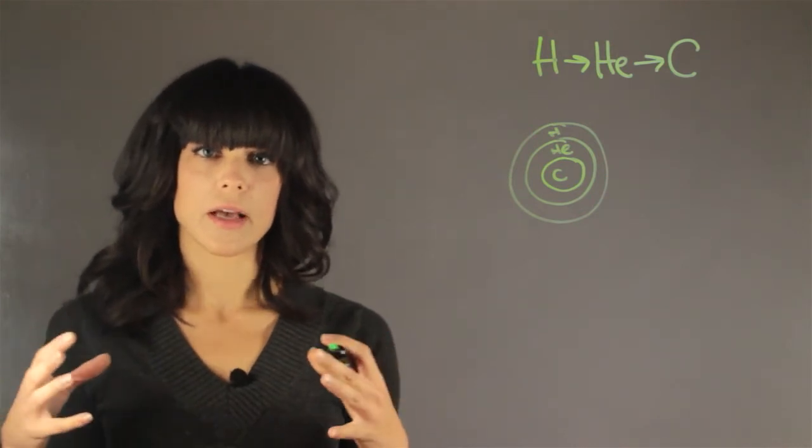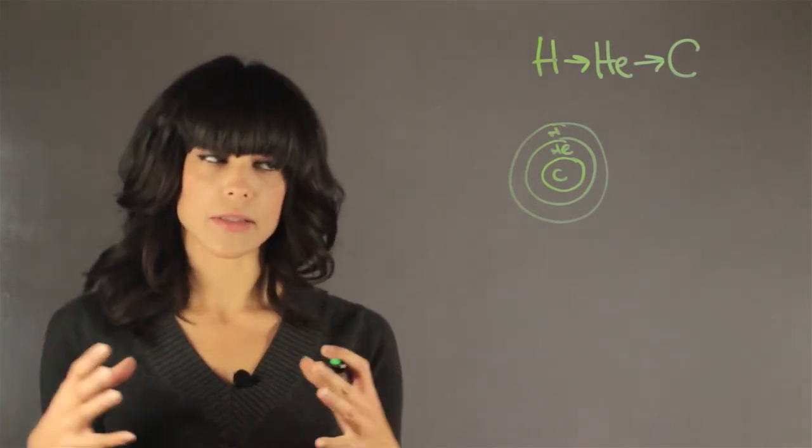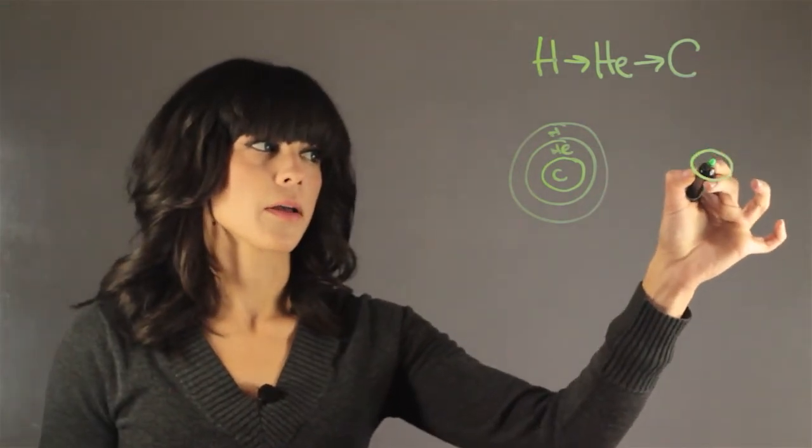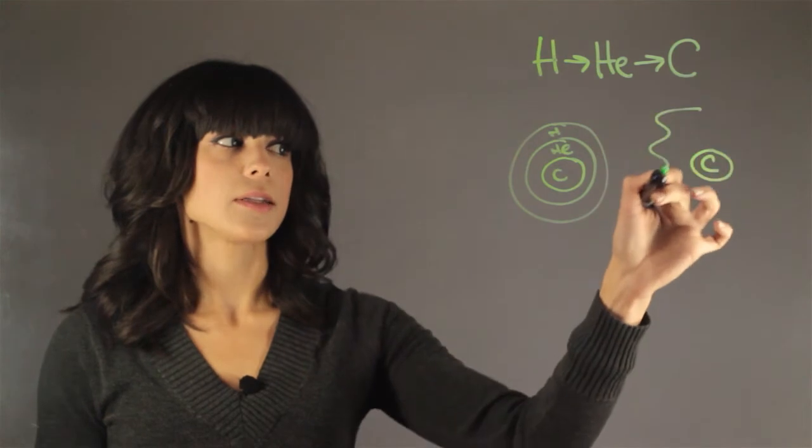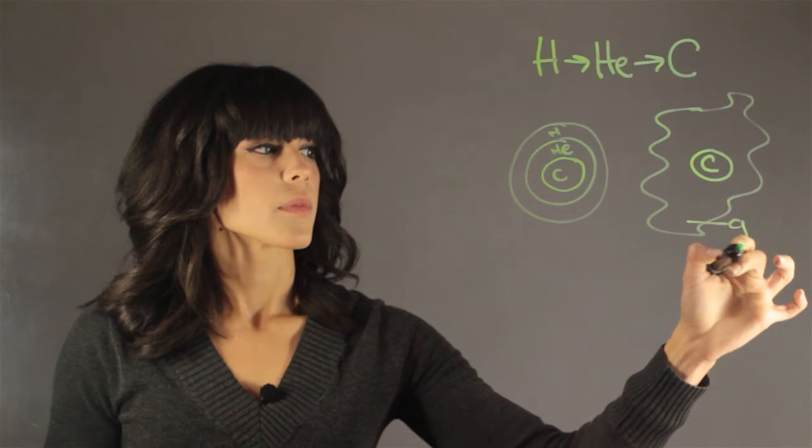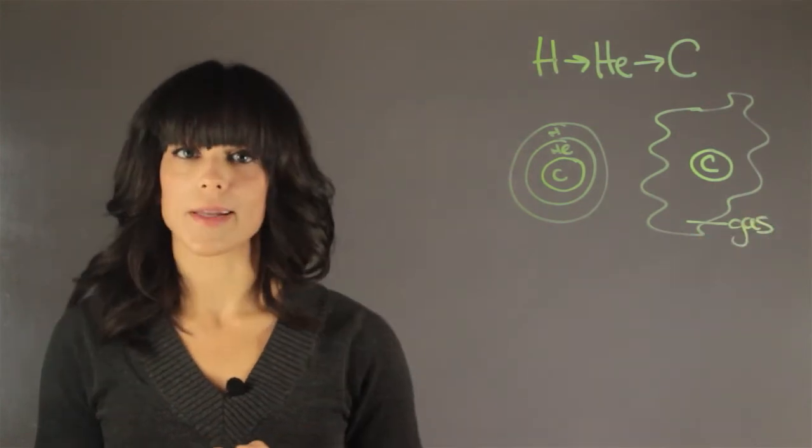What you end up with is a carbon core and a really diffused cloud of gas, and this is called a planetary nebula.